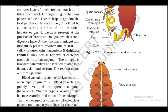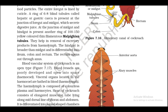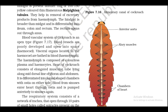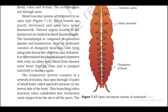At the junction of the midgut and hindgut is present another ring of 100 to 150 yellow-colored thin filamentous Malpighian tubules, which help in removal of excretory products from the haemolymph. The hindgut is broader than the midgut and is differentiated into ileum, colon, and rectum. The rectum opens out through the anus (figure 7.16). The blood vascular system of cockroach is of the open type (figure 7.17).